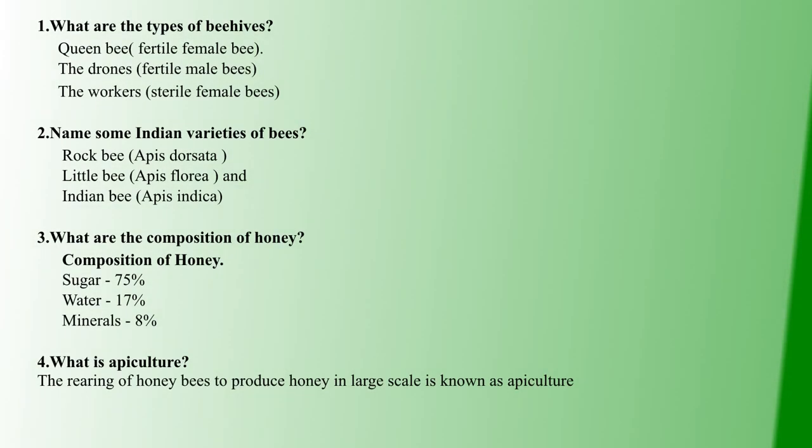First question: What are the types of beehives? Beehives have three types. Queen bee, drones, and workers. Queen bee are fertile female bees. Drones are the fertile male bees. Workers are sterile female bees.